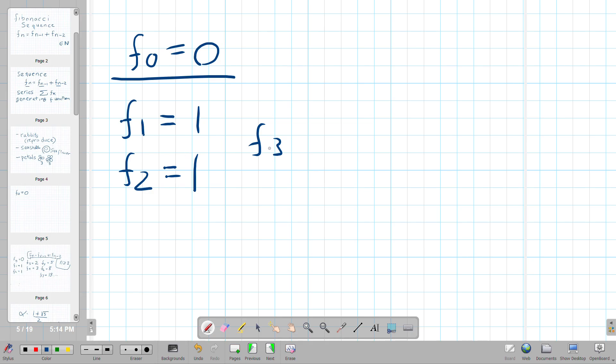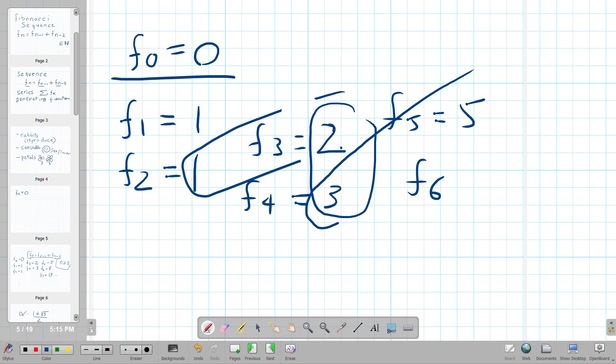And then F3 is the sum of those two. Then F4 is the sum of these two, which is three. And then F5 is five, right? You're summing these two. Then F6 is eight. And so on.